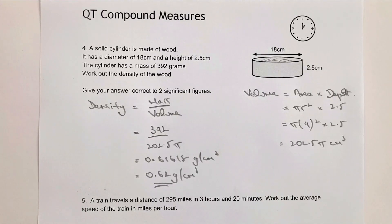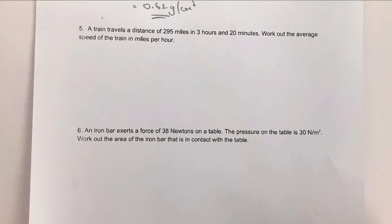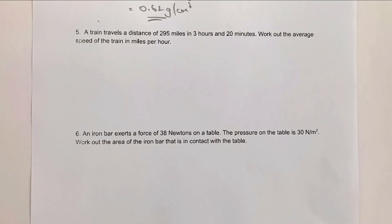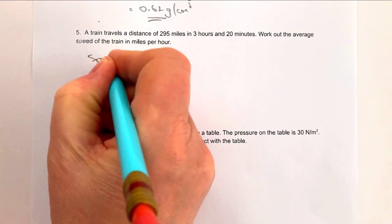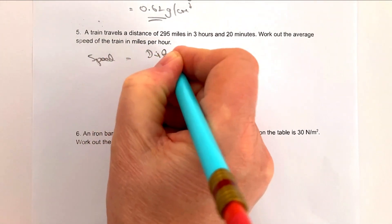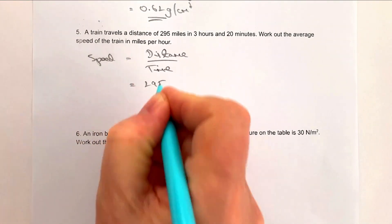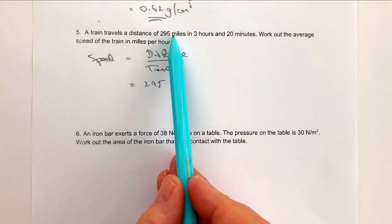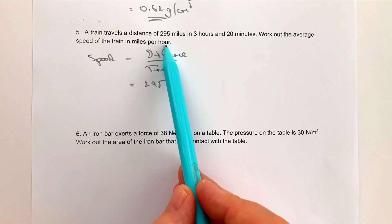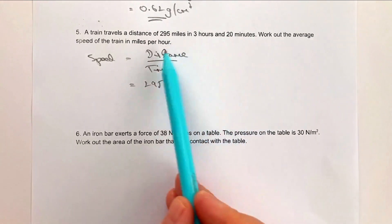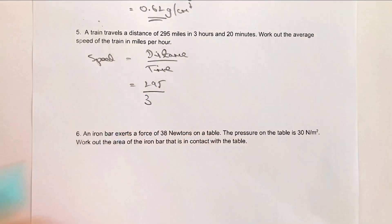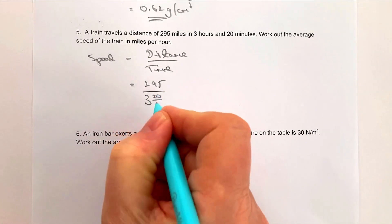Question five: a train travels a given distance in 3 hours and 20 minutes. The formula is speed equals distance divided by time. The distance is 295 miles, and we need to convert 3 hours 20 minutes into hours. I'd write that as 3 hours and 20 over 60, since 20 minutes is one third of an hour.